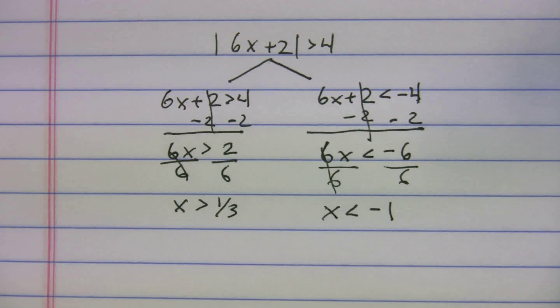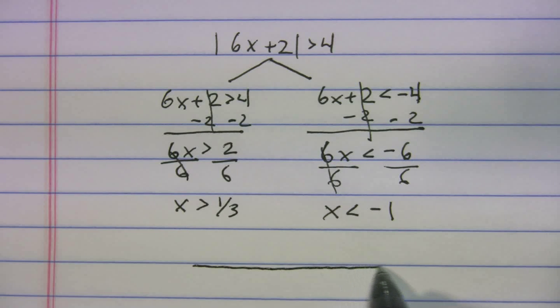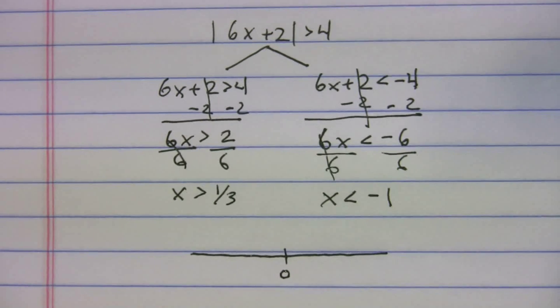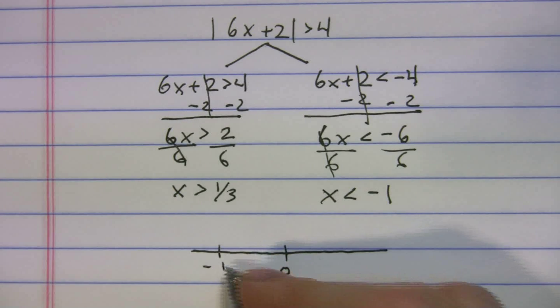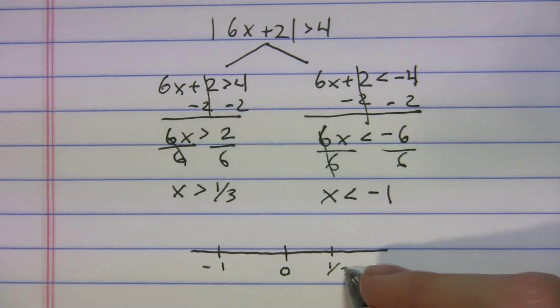So you have a solution set here. And come test day, you might want to do this. If you can't visualize it, draw a number line. Let's figure out where the heck our solution set lies. So if that's zero, I'll move this up just a little bit. If that's zero, we'll make that -1. That will be 1/3.